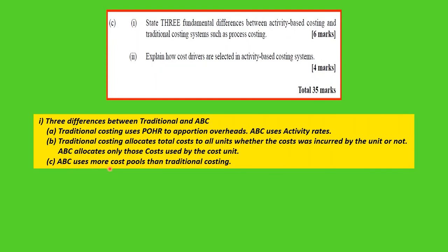The third difference: ABC uses more cost pools than traditional costing. ABC can identify any number of activities within a business, assign an activity rate to each, and allocate costs accordingly. Traditional costing typically uses only one plant-wide rate, or at most a limited number of departmental rates — far fewer than the pools available under ABC.